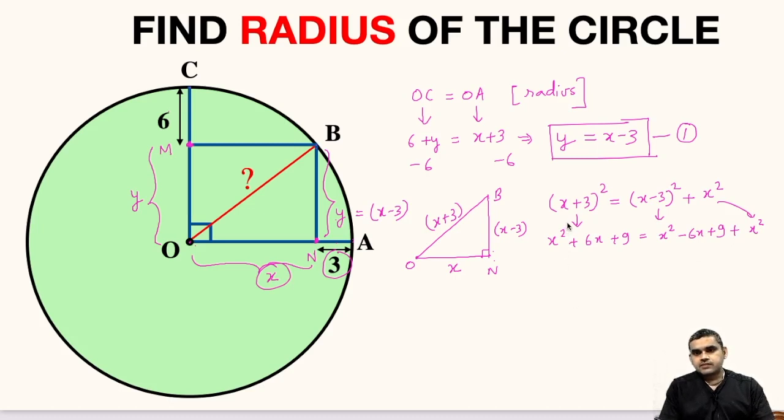Now, this X squared will get cancelled from both the sides. Likewise, 9 will get cancelled from both the sides. So we will get 6X equals minus 6X plus X squared.